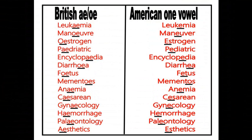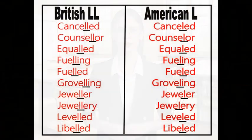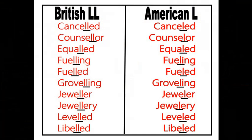Further examples include: anemia, cesarean, gynecology, hemorrhage, paleontology, and aesthetics. British English doubles the 'l' in verbs ending in a vowel plus 'l' when adding a suffix with a vowel; American English does not. Examples: cancelled, counselor, equaled, fueling, fueled, groveling, jeweler, jewelry, leveled, libeled.